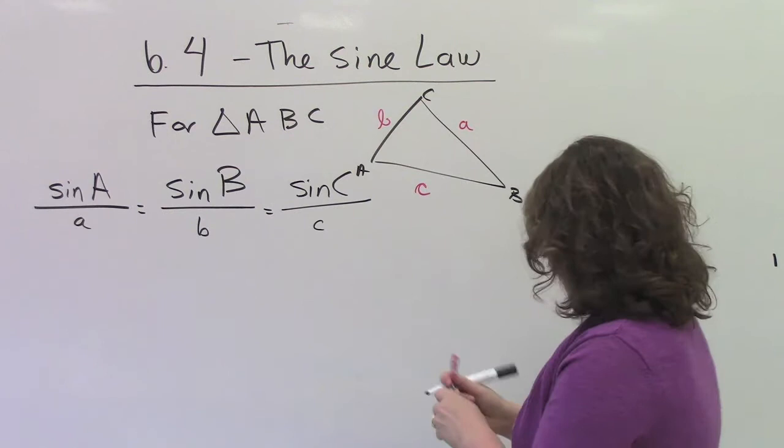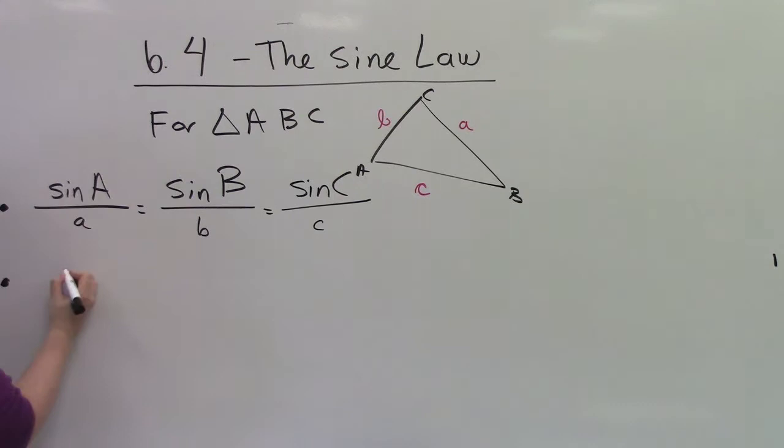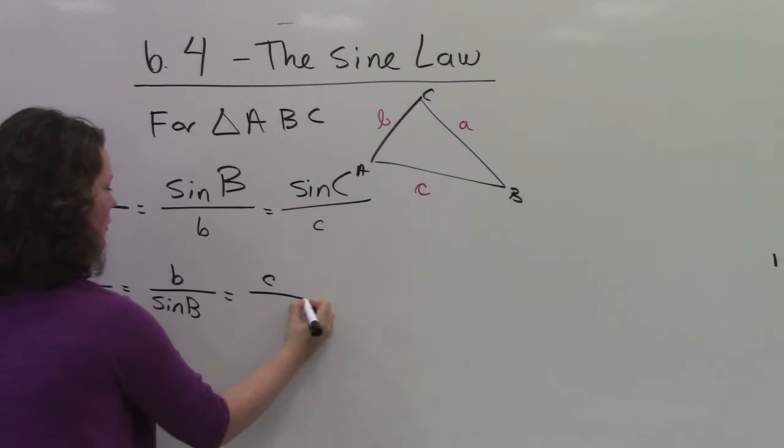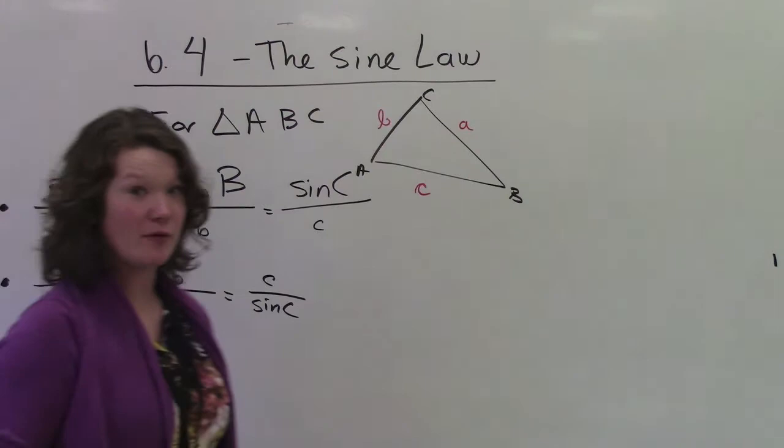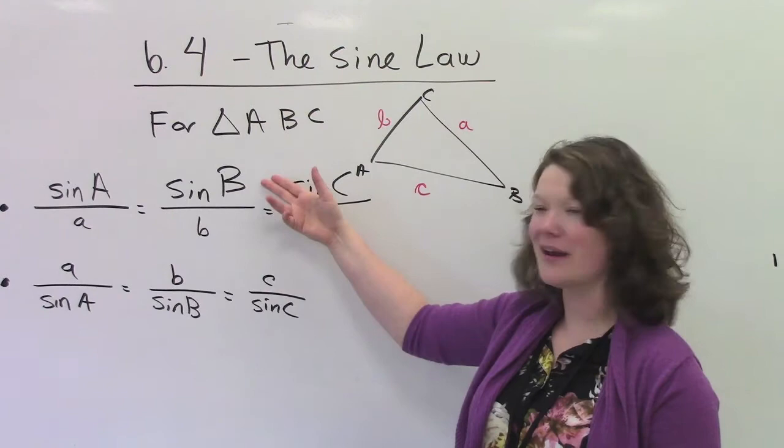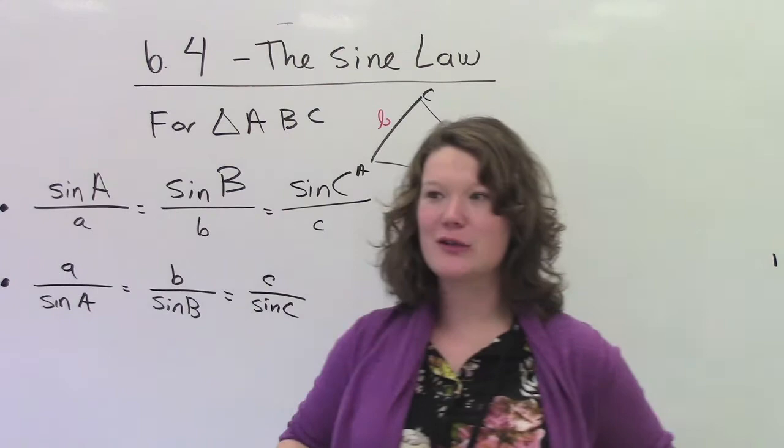The other way that we can express the Sine Law is like this: a over Sine A equals little b over Sine B equals little c over Sine C. Whichever way, whichever way works. It doesn't really matter which one you choose. If you are looking for a length of a side, it's easier to use this one, having the length on the numerator. And if you are looking for an angle, it's easier to use this one.